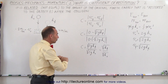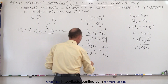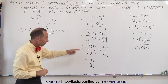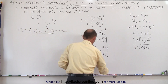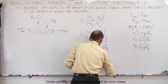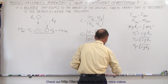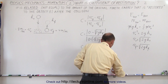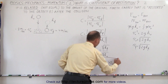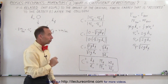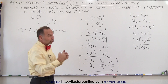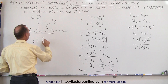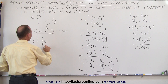If we square both sides, we find that c squared — the coefficient of restitution squared — equals h final divided by h initial. This ratio of heights is proportional to the ratio of potential energies, final to initial, which equals the ratio of kinetic energy final right after the collision to kinetic energy initial right before the collision. So c squared equals the ratio of the energy after the collision divided by the energy before the collision.